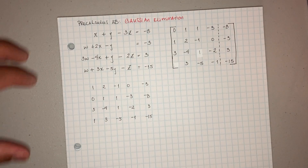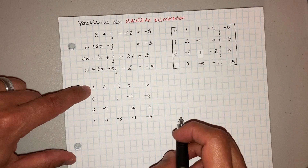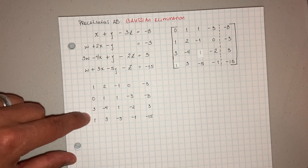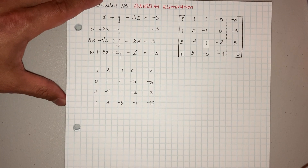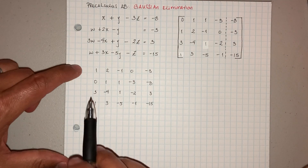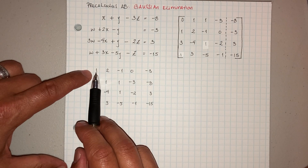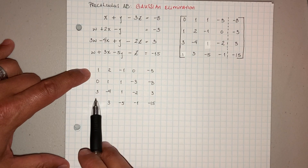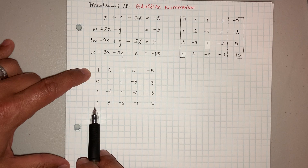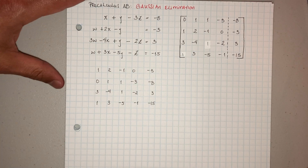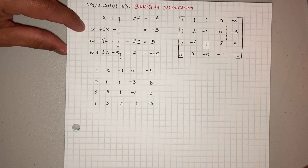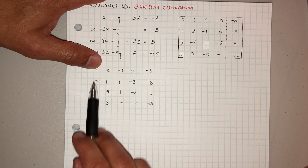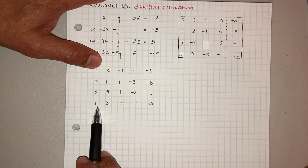Now from there I want everything below this 1 to be a 0. This guy right here is what we call your pivot. This is what you're going to be using in order to make these guys a 0. I'm going to use this guy to make this entry into a 0 and this entry into a 0.